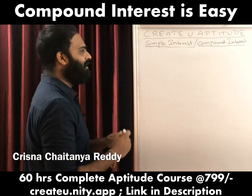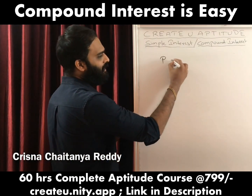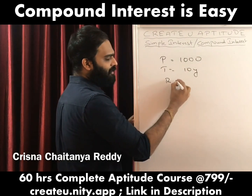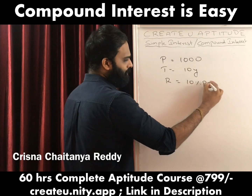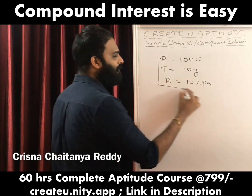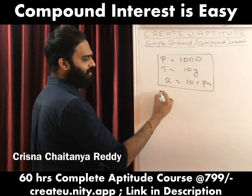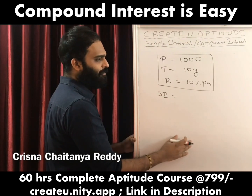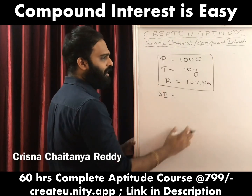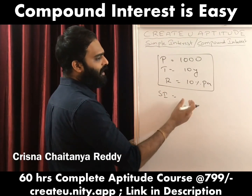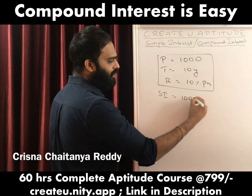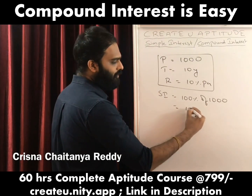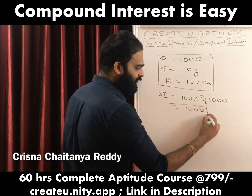For example, if the principal is given as 1000 rupees, time is given as 10 years, and rate of interest is given as 10% per annum — to find the simple interest, even without the formula, I can say 10% every year for 10 years is 100%. 100% of 1000 rupees is 1000 rupees. So the simple interest is 1000 rupees.